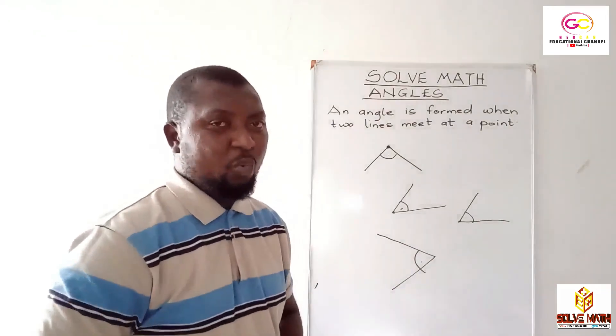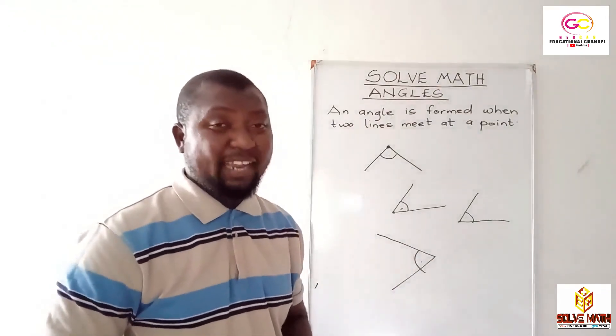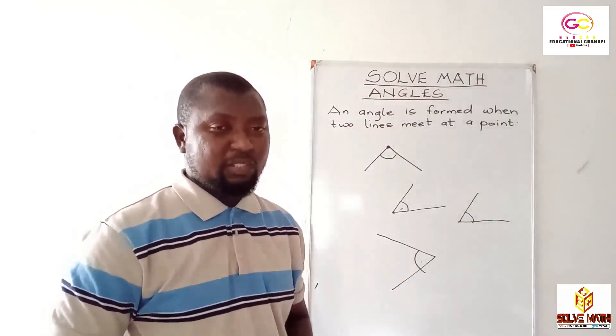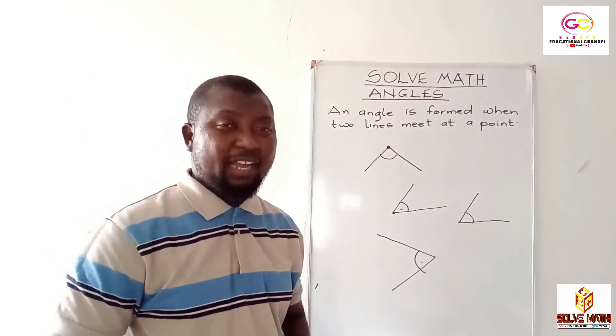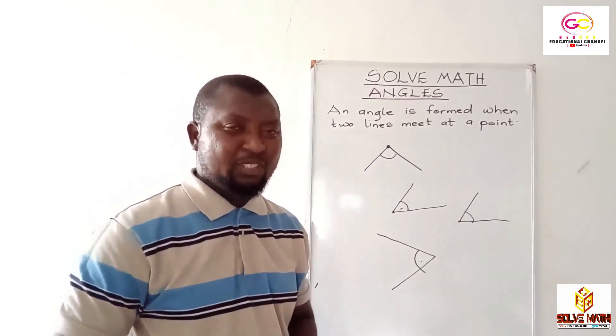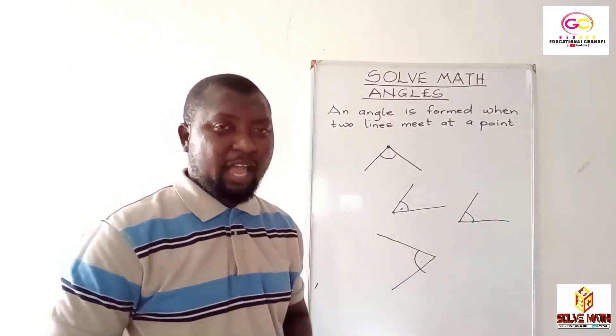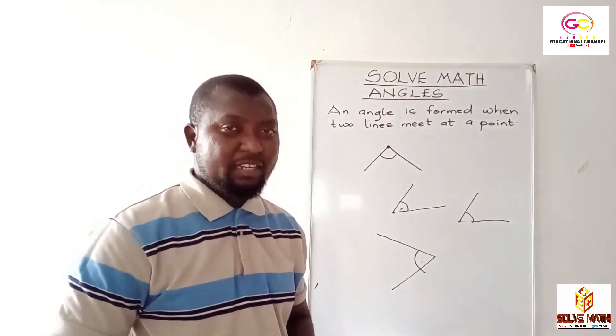So now you should be able to draw or identify angles. Good. An angle is formed when two lines meet at a particular point. And also take note that angles are measured in degrees.